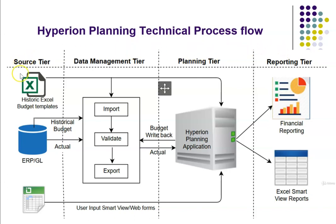Now we will see the details about the source layer. The first one is historic Excel budget templates. Before starting a Hyperion application project, clients might be using Excel files. We use the word 'budget templates' instead of simple files because they contain various formulas to define revenue budgeting and all expense calculations.